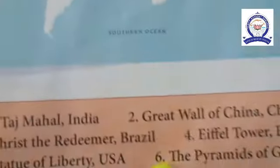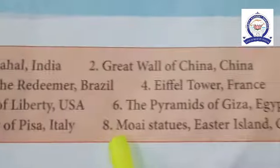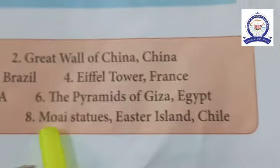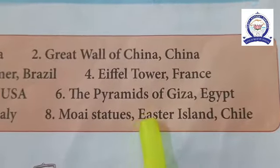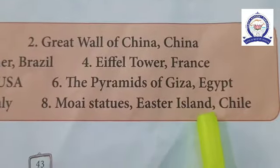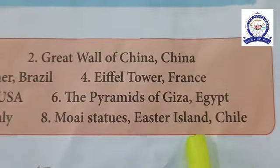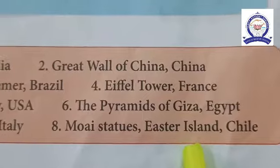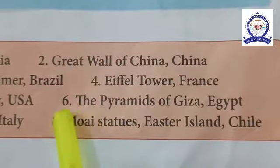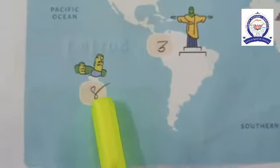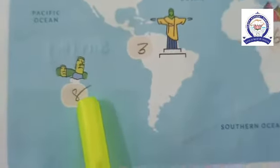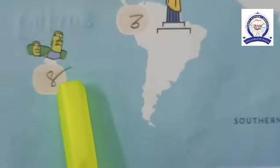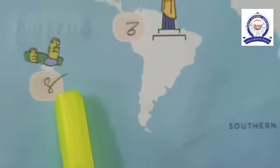The eighth one is the Moai Statues, Easter Island, Chile. This is an island. The Moai Statues are located on Easter Island, Chile.